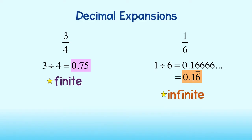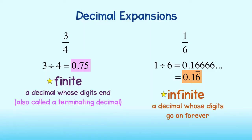More formally, we say the decimal expansion of a number is finite if the digits end. You may have also heard this to be called a terminating decimal. On the other hand, a decimal is infinite if the digits continue on forever.